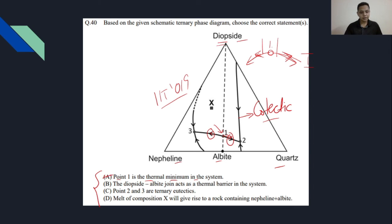Now let us understand the second one. It says the diopside-albite join acts as a thermal barrier in the system. We have just defined it because this point 1 is also lying on this diopside-albite line. I can very well say that yes, this line acts as a thermal barrier, what we have discussed just now in the previous slide. So this option is correct.